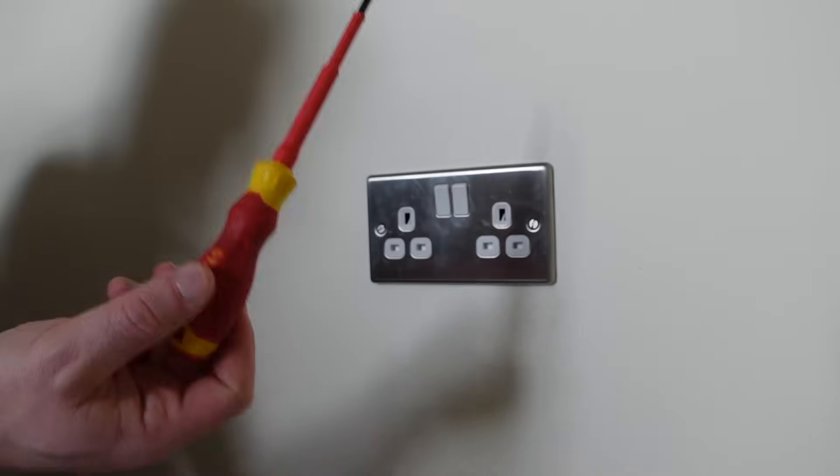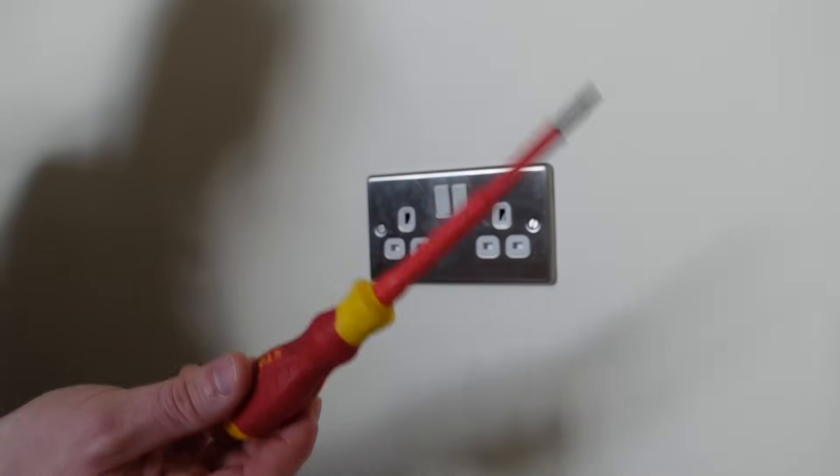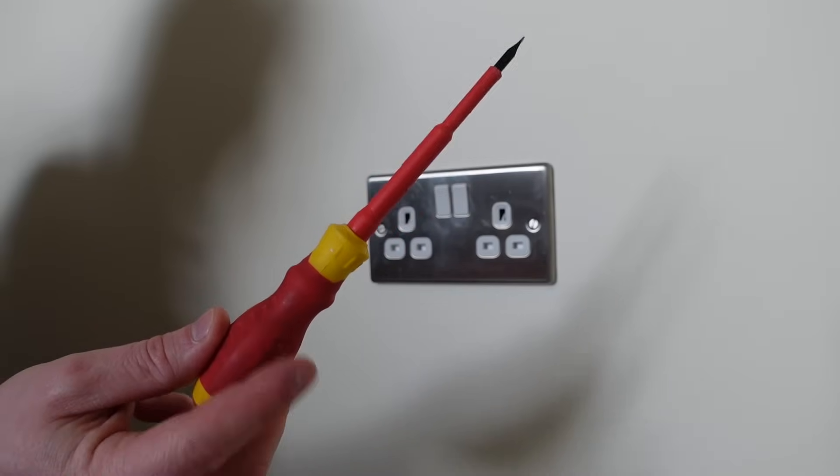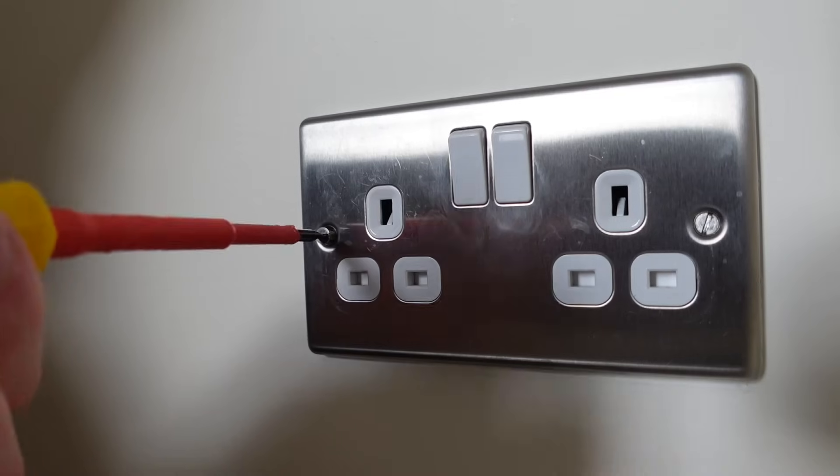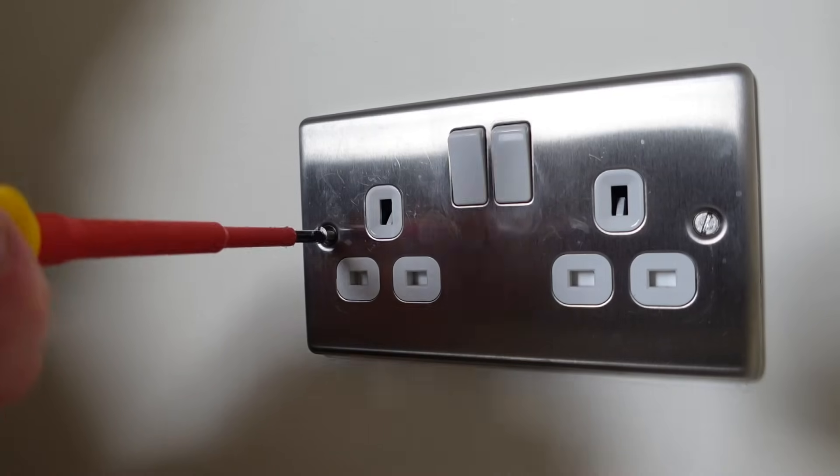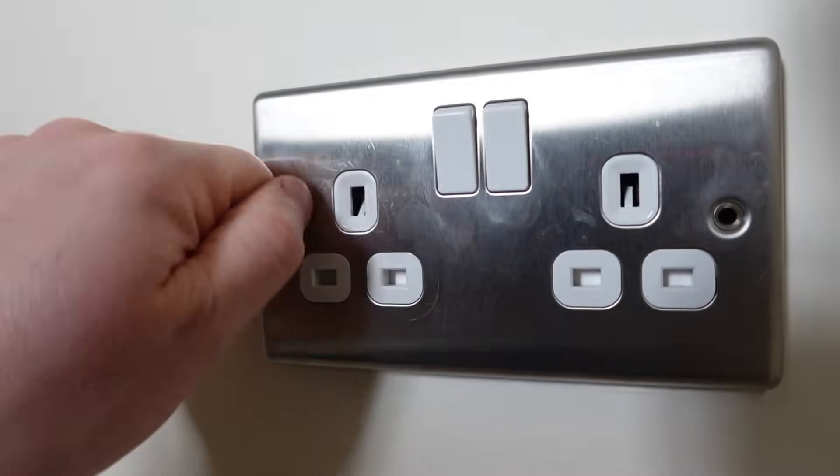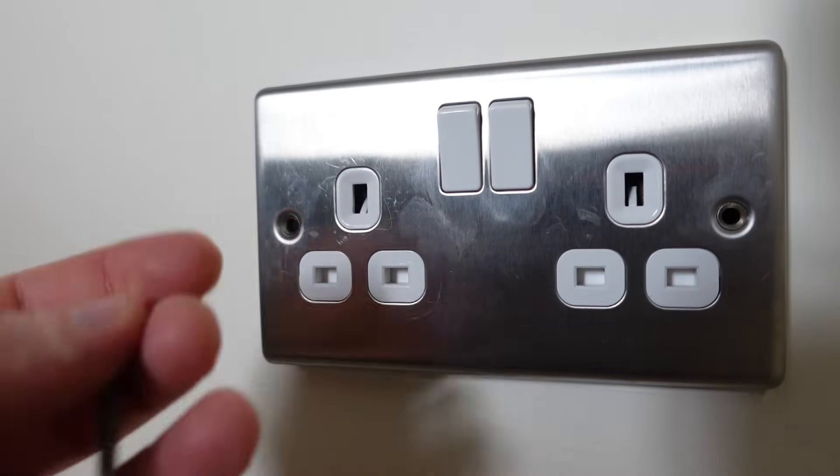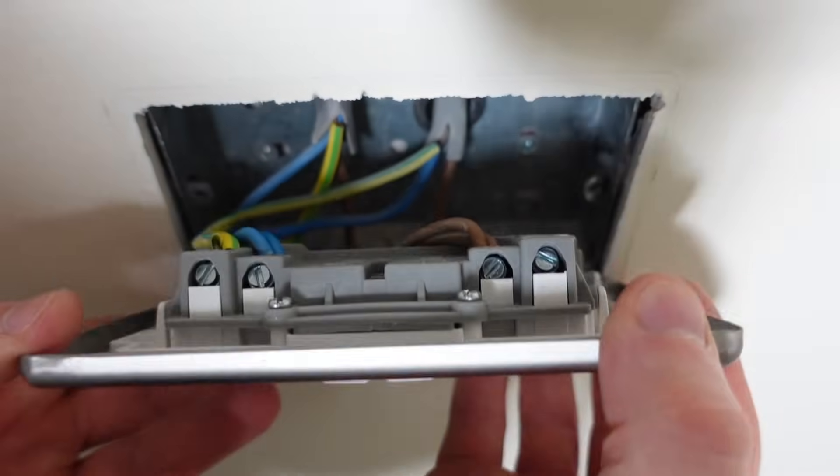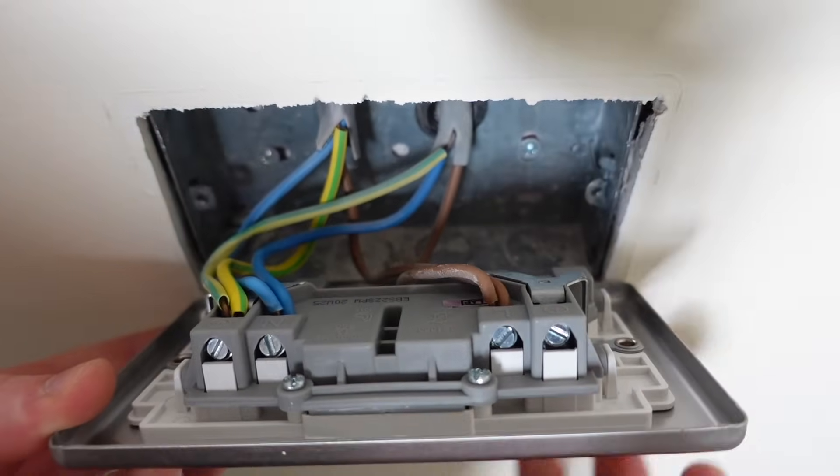For this you want an insulated flathead screwdriver. You could use a normal screwdriver but I do recommend using an insulated one. Now we'll just remove the two screws that are on the face plate, just pop the screws to the side for now. You'll now be able to pull the socket away from the wall enough to expose the terminals in the back of the socket.